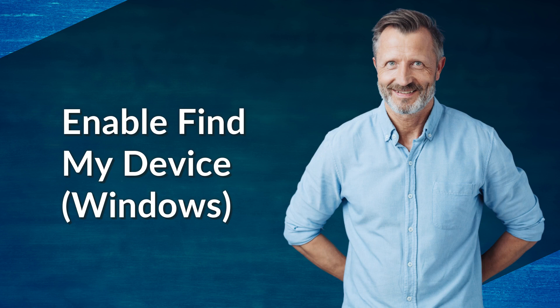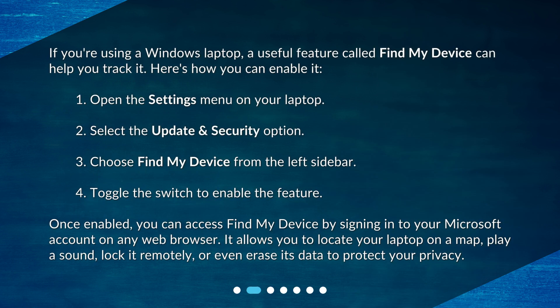Enable Find My Device on Windows. If you're using a Windows laptop, a useful feature called Find My Device can help you track it. Here's how you can enable it. 1. Open the Settings menu on your laptop. 2. Select the Update and Security option.